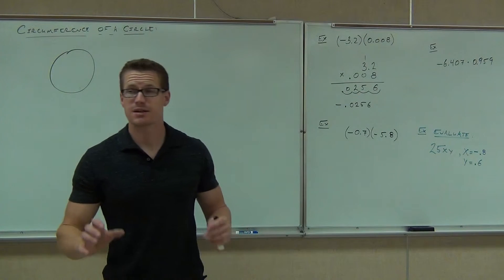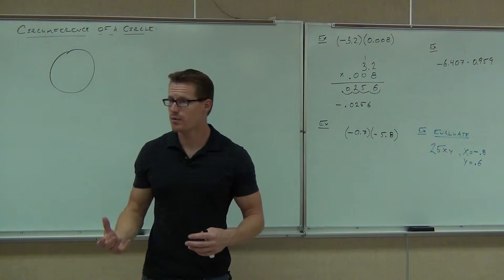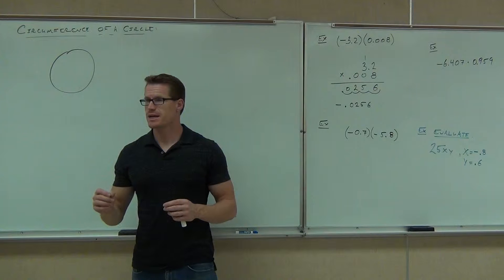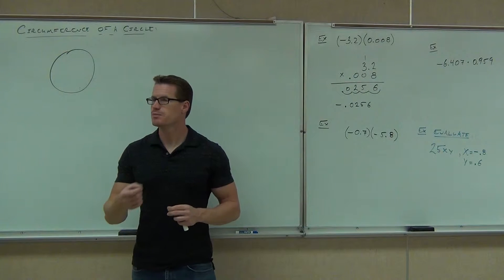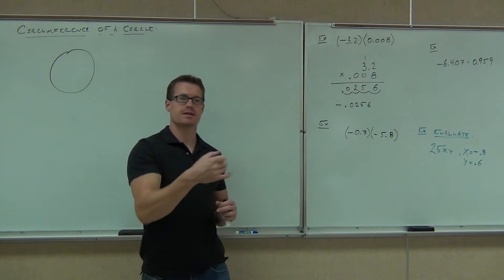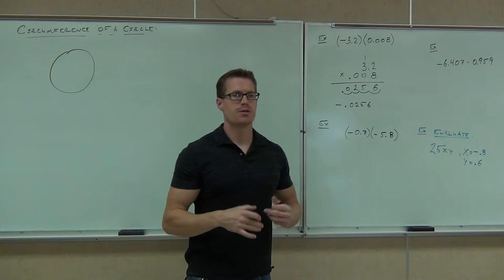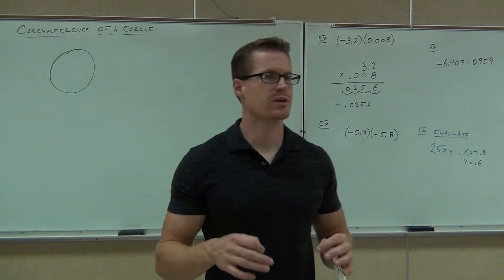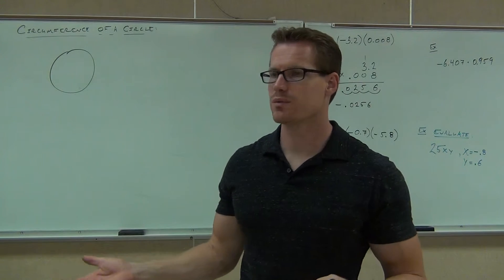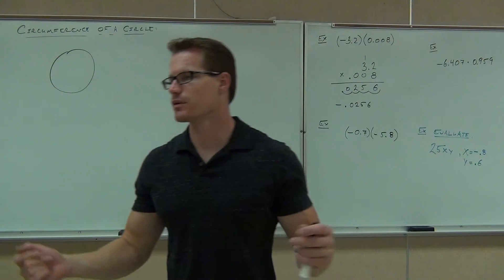Multiplying decimals is just like multiplying whole numbers. We take care of the decimal places at the end, moving from the right-hand side. The negative and positive signs work just like the multiplication rules we know and love.